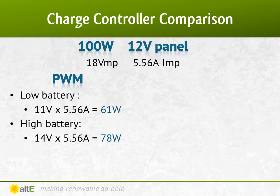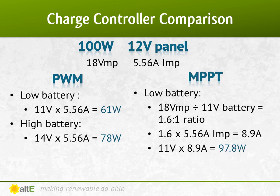Now let's do the math with an MPPT charge controller. When the battery is low, it drops the voltage from 18 volts down to 11 volts, and that drop is a ratio of 1.6 — 18 volts divided by 11 volts. So when it drops the volts by 1.6, to keep power constant, it increases the current by 1.6 as well, increasing the current from 5.56 to 8.9 amps. 11 volts times 8.9 amps equals 97 watts, compared with a PWM output of 61 watts.